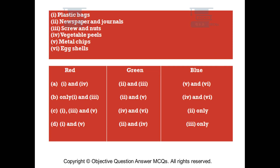Option A: Red - 1 and 4; Green - 2 and 3; Blue - 5 and 6. Option B: Red - only 1 and 3; Green - 2 and 5; Blue - 4 and 6. Option C: Red - 1, 3, and 5; Green - 4 and 6; Blue - 2 only. Option D: Red - 1 and 5; Green - 2 and 4; Blue - 3 only.